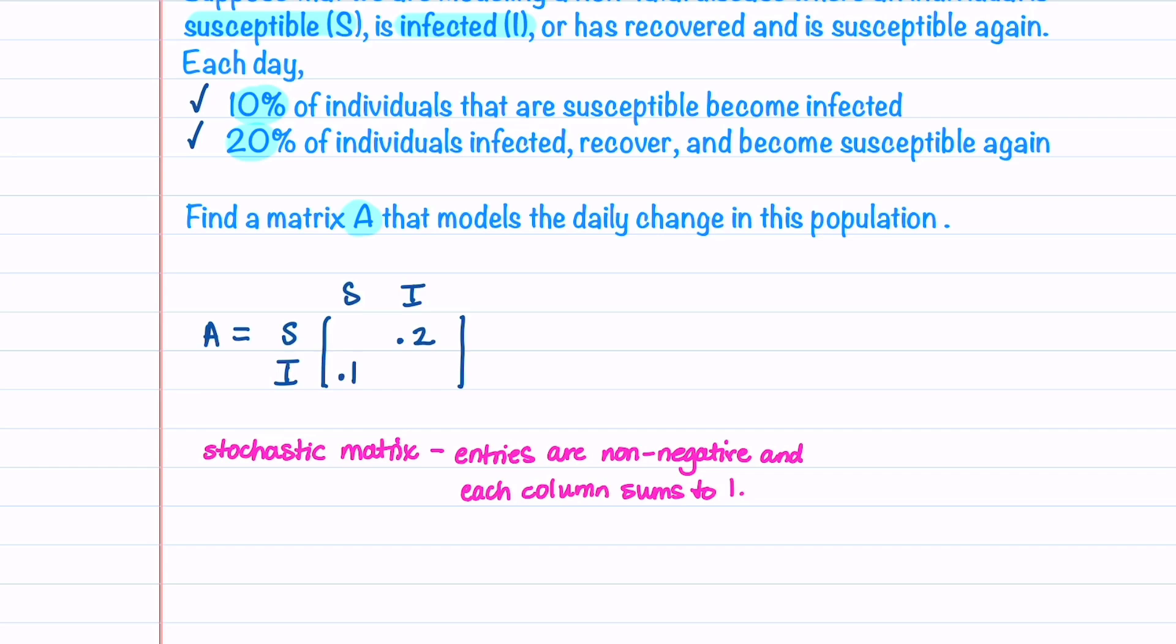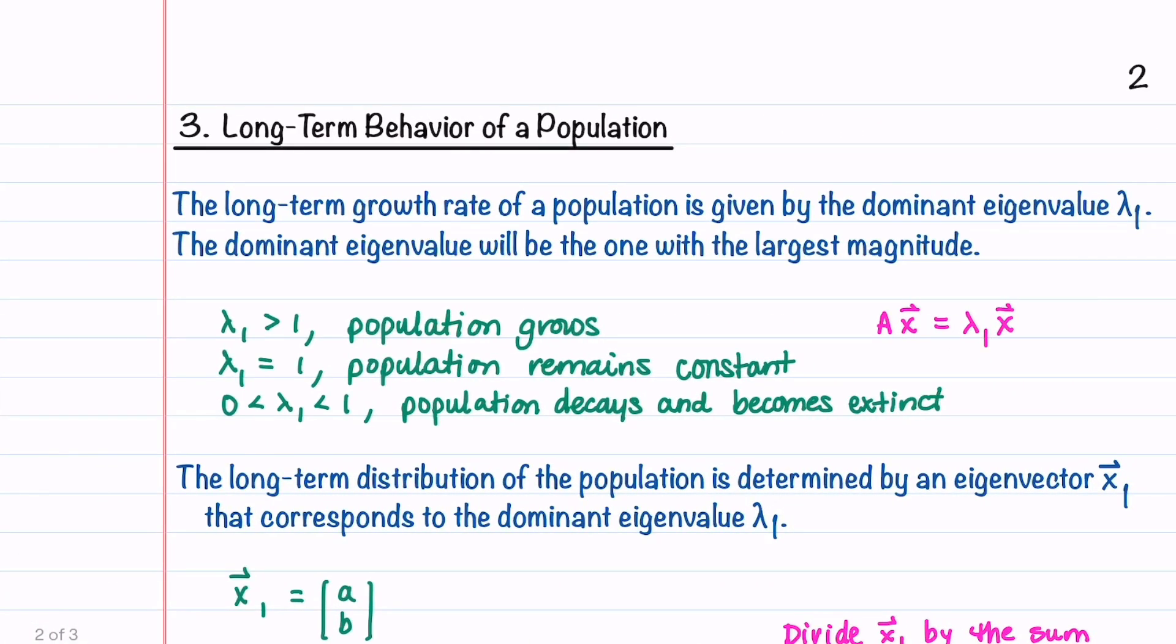Since the number of individuals have to add up to 100%, we have 0.9 in this entry and 0.8 in this entry. Our matrix is a stochastic matrix where all entries are non-negative and each column sums to 1 so that the population ends up being 100%. We're now going to use the transition matrix we just created to analyze the long-term behavior of the population.